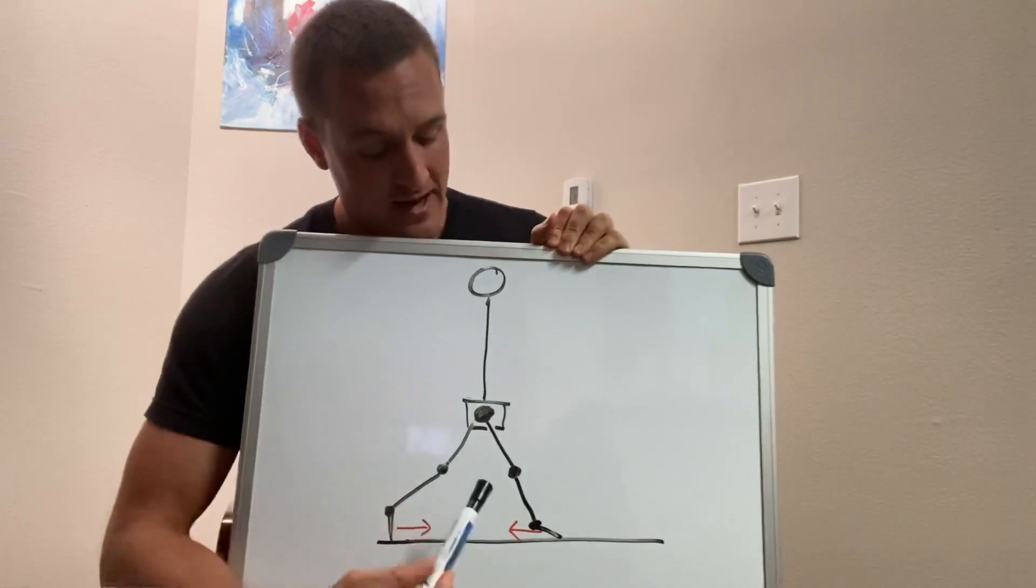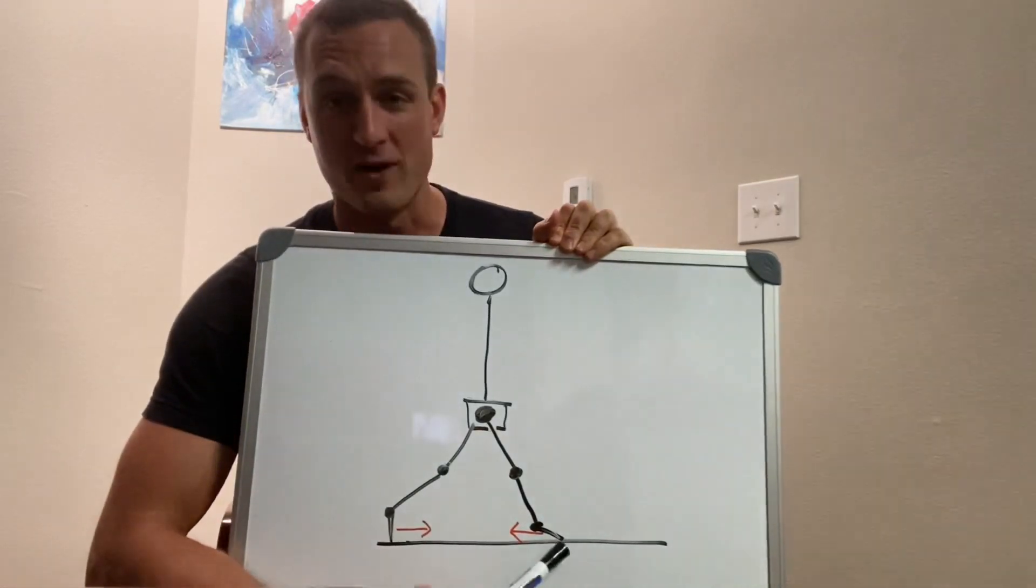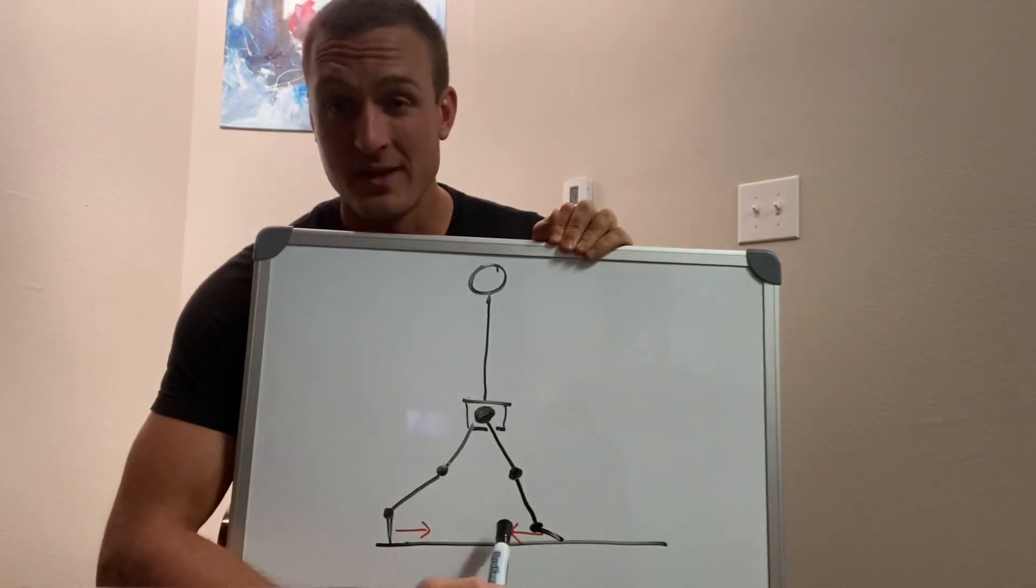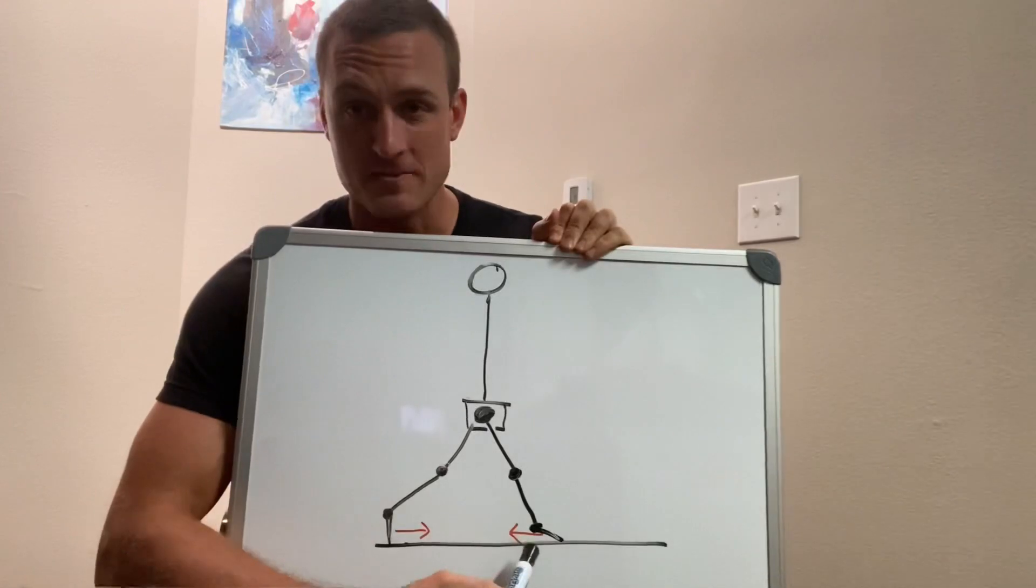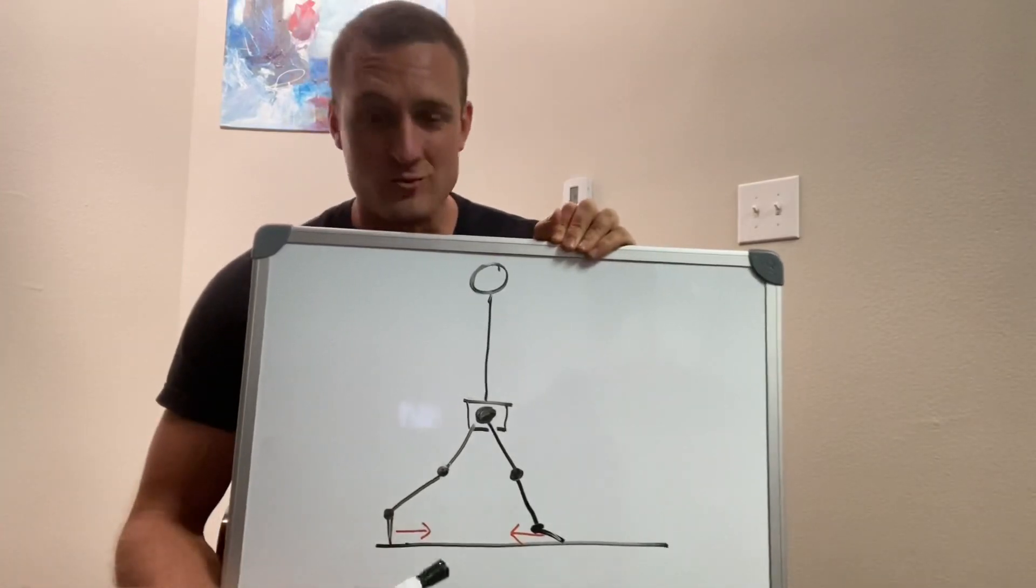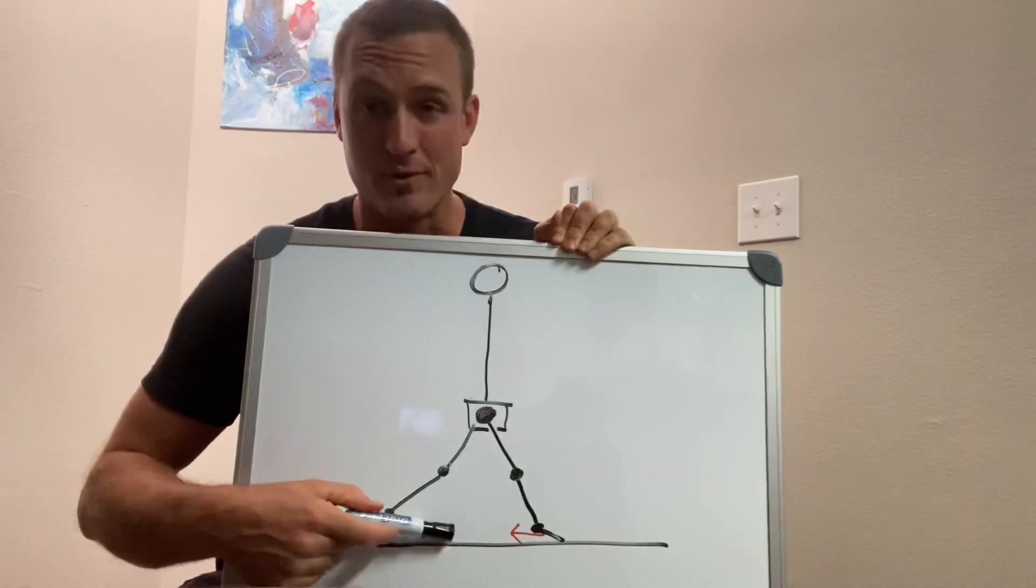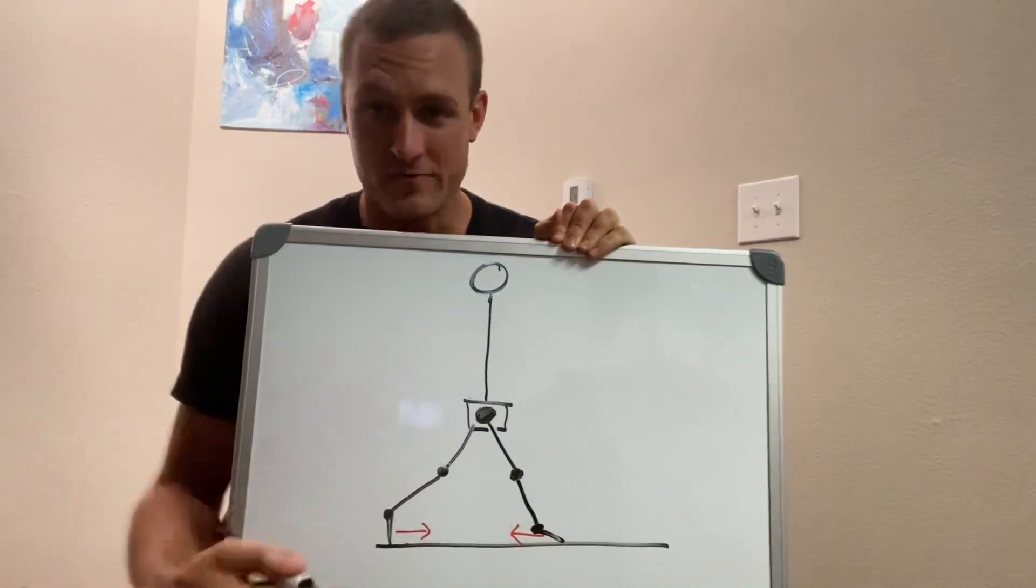If you're contacting the ground further out in front, you're going to generate a little bit larger breaking impulse in the beginning of your stance phase. And that's going to mean you have to push behind you more to generate more propulsive impulse in the latter part of your stance phase.